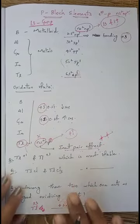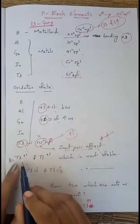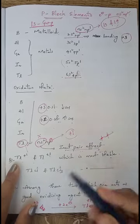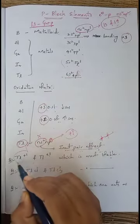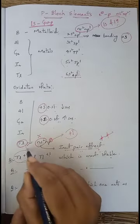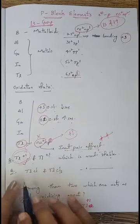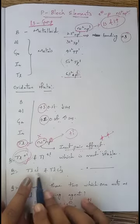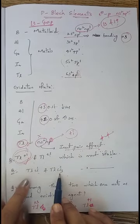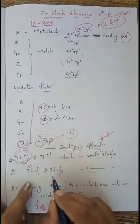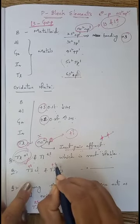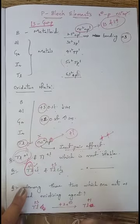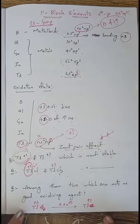Now let's look at some questions related to oxidation state. First: between Tl⁺ and Tl³⁺, which is most stable? Since down the group the +1 oxidation state is more stable, Tl⁺ is more stable. Second: between thallium chloride (TlCl) and thallium trichloride (TlCl₃), which is more stable? In thallium chloride, thallium is in the +1 oxidation state, which is highly stable, so thallium chloride is more stable than thallium trichloride.